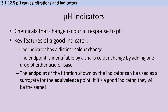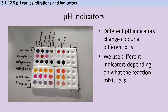pH indicators are chemicals that change color in response to pH. When picking a good indicator, we want something with a distinct color change — you would never use universal indicator for a titration because you can't tell exactly where the color change is. The end point is identifiable by a sharp color change occurring when you add a single drop of acid or base. The end point can be used as a surrogate for the equivalence point, where hydrogen ions and hydroxide ions are equal, but a strong acid with a weak base will need a different indicator compared to a weak acid with a strong base.